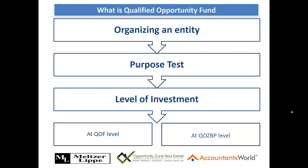A clarifying question: do partners have the option of either the end-of-year date or 180 days? Correct — the default rule is that the partner's 180-day investment period starts on the last day of the partnership's tax year. However, the partner can elect to use the partnership's own 180-day clock, which began on the date of the gain event itself.